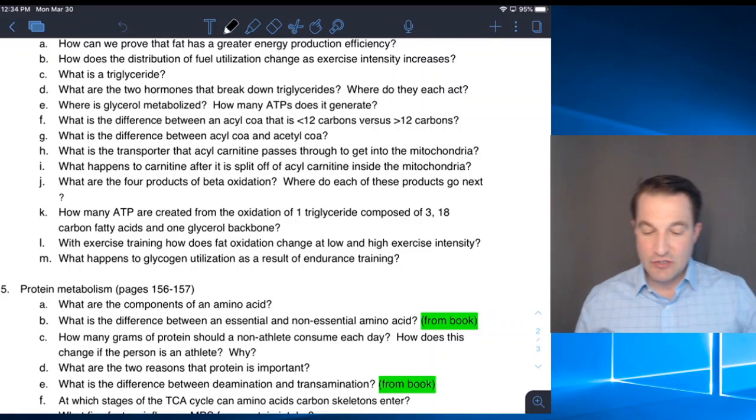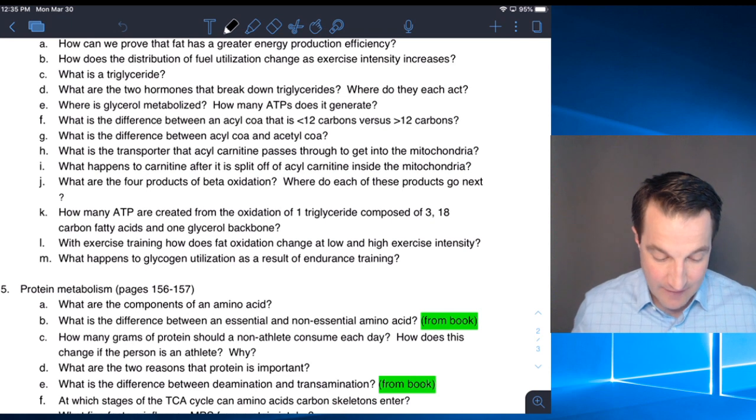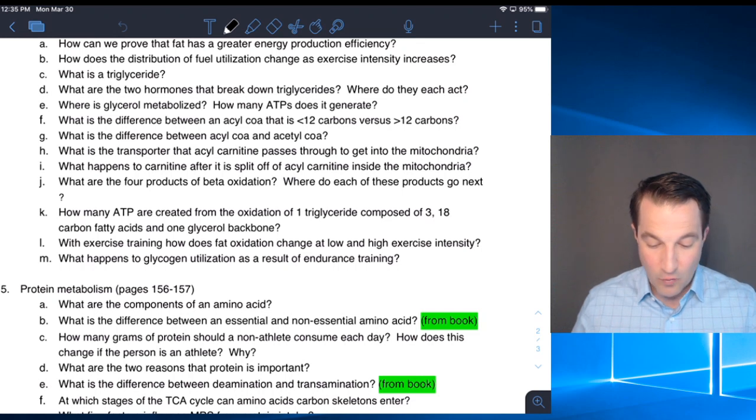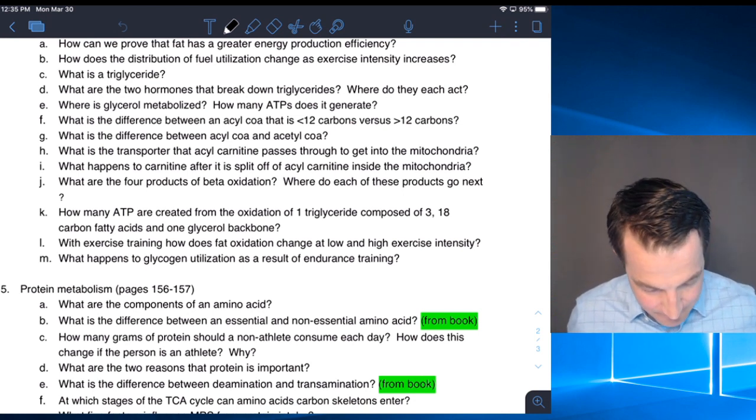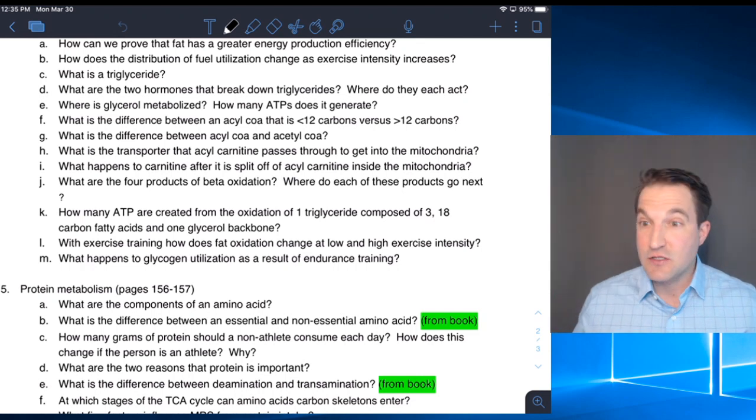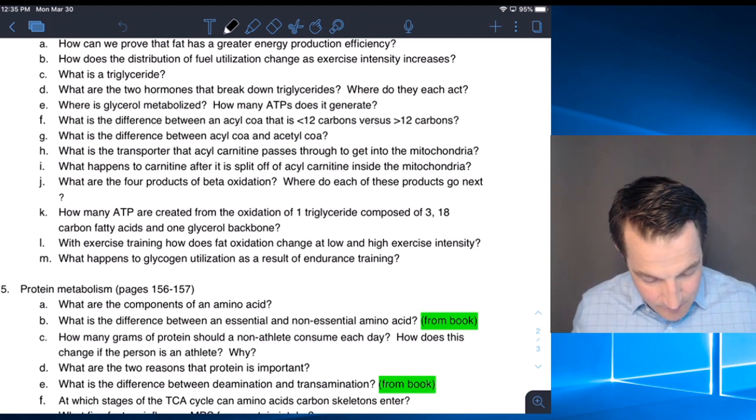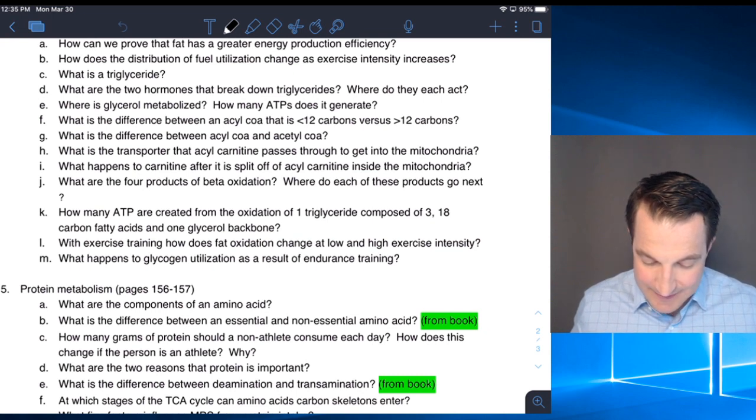Distribution of fuel utilization changes with exercise intensity. The more intense we get, the more carbohydrate we're going to be using, the less amount of fat. At low exercise intensities, we're using a lot of fat. Triglyceride is our three free fatty acids and our glycerol backbone. The hormones are hormone-sensitive lipase and lipoprotein lipase. Acyl-CoA, less than 12 carbons and more than 12 carbons determines whether they can diffuse through the mitochondria or not. Glycerol is metabolized in the liver, giving us 19 ATPs.